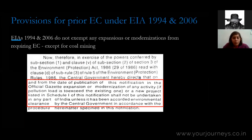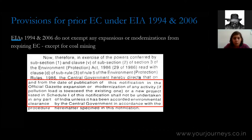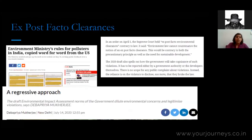A lot of projects are in fact modernization and expansion projects, especially mines, so this dilution specifically for expansion projects seems motivated and, for lack of a better word, shady. It is also important to note that the EIA notification since 1994 requires that expansion or modernization must obtain a fresh clearance and go through all four stages of the clearance process to be permitted.